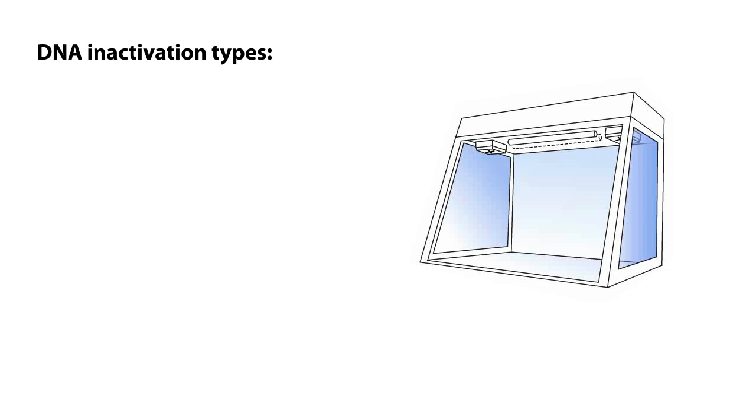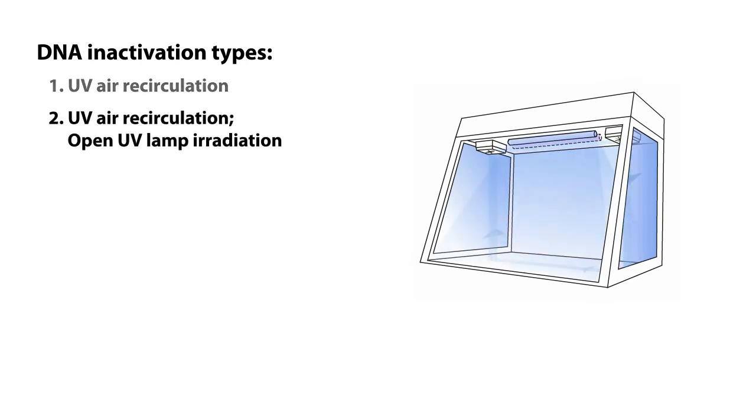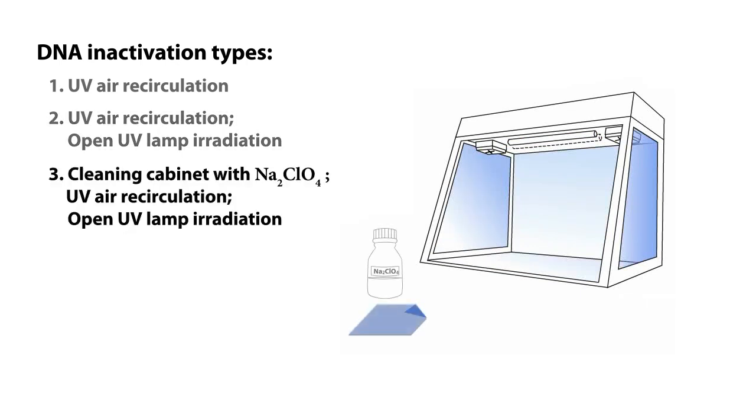The experiment goals are to check the efficiency of following DNA inactivation types: UV air circulation, UV air circulation combined with open UV lamp irradiation, washing cabinet surfaces with natural chlorate, followed by UV air circulation and open UV lamp irradiation.